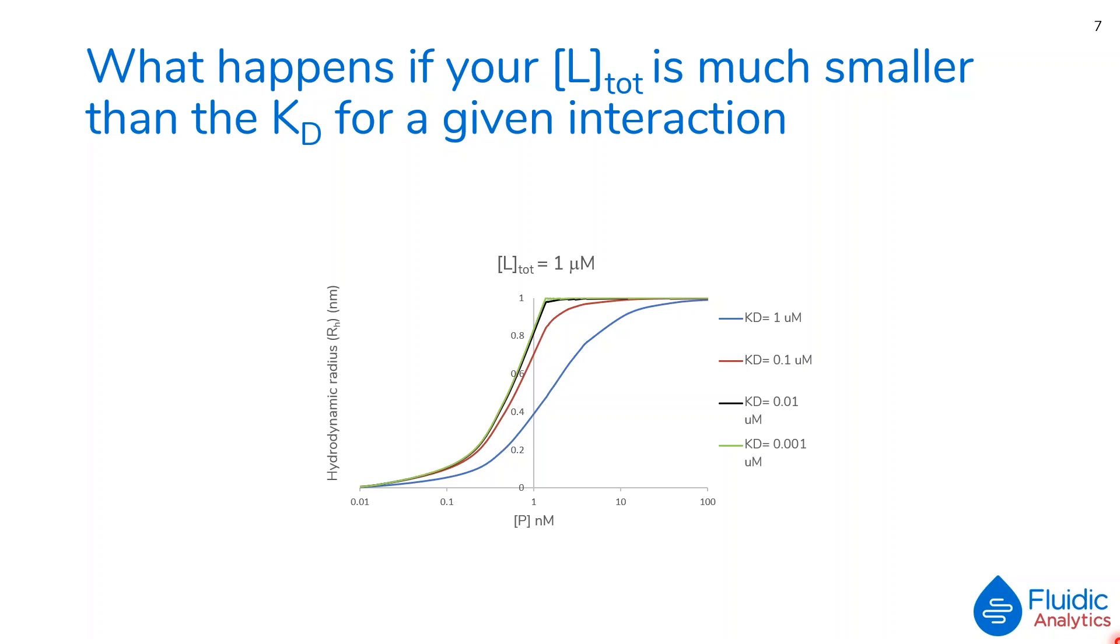Since these curves are so close and hard to distinguish, the graph presumes that the KD values must be close together, when we know in reality they are not. This illustrates why we should always use the lowest concentration of labeled species to ensure you get good discrimination for KD values.